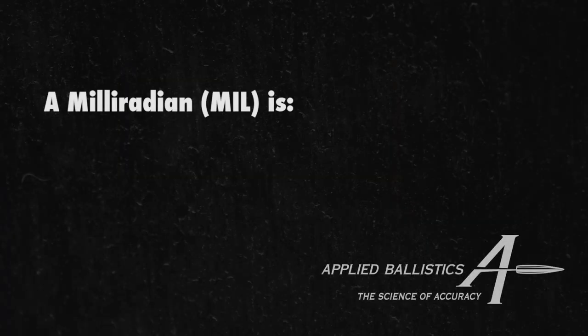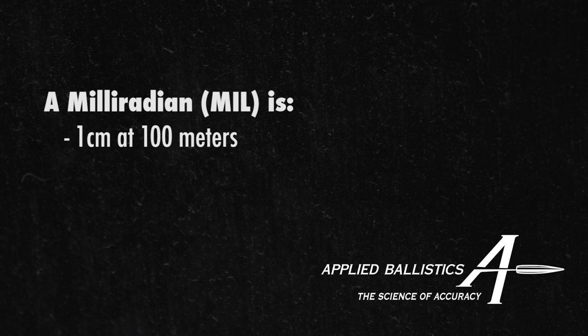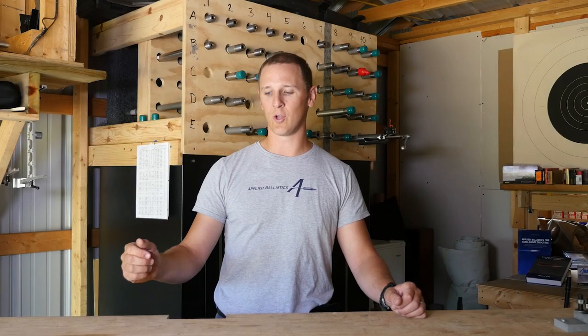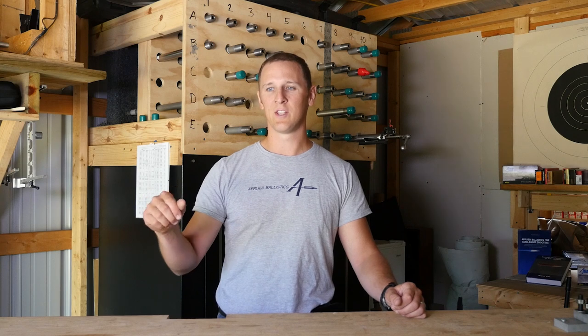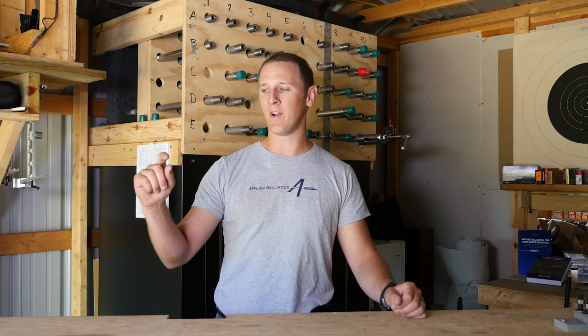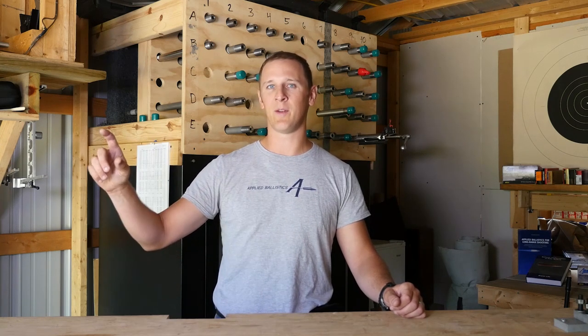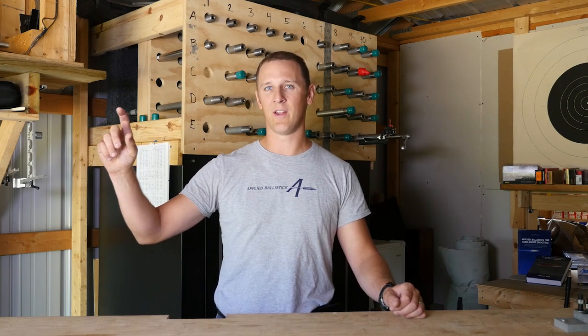Likewise with mils — mil is short for mil radian, and that's kind of the metric version. A mil radian is one centimeter at a hundred meters, so it's 10 centimeters at a thousand meters. And that's what one click on a mil scope will give you. On mil scopes, your clicks are in tenth mils, so every click gives you a centimeter at a hundred meters and 10 centimeters at a thousand meters.